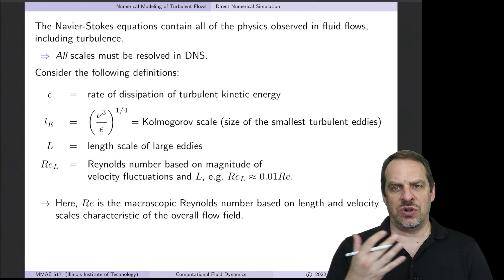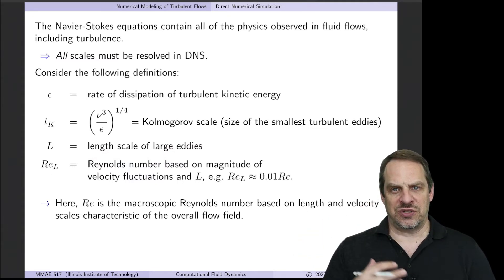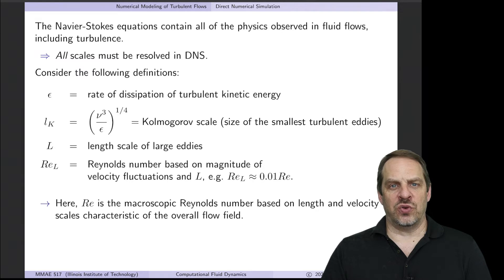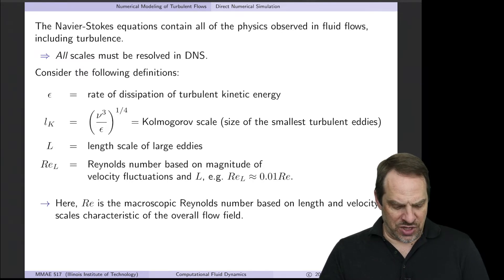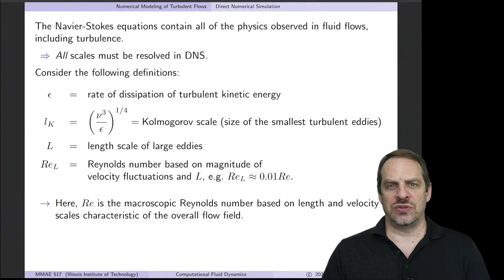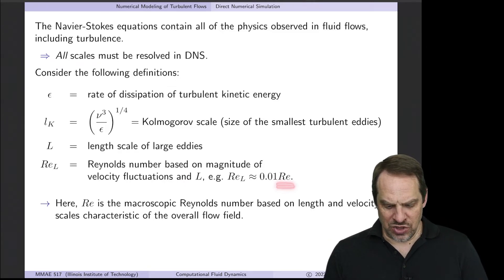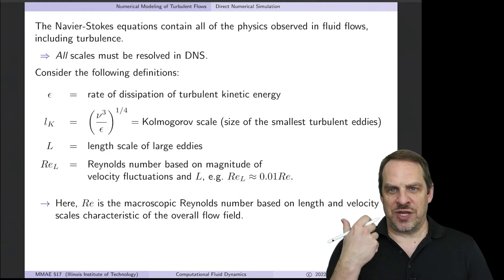That's the largest scales for a particular flow. Then Re_L, the Reynolds number sub L, will be based on the magnitude of the velocity fluctuations and this overall scale. So it's not the overall Reynolds number, Re.